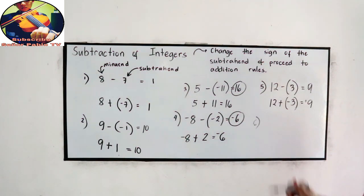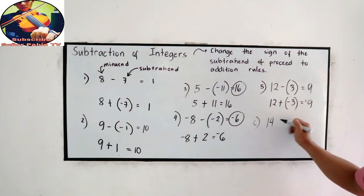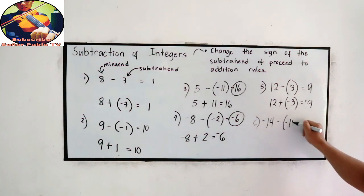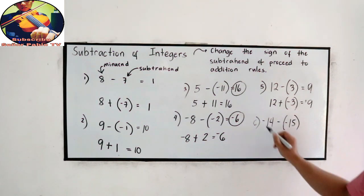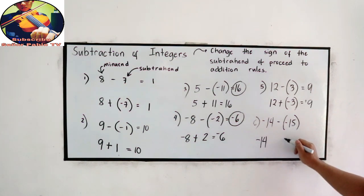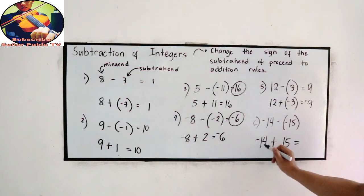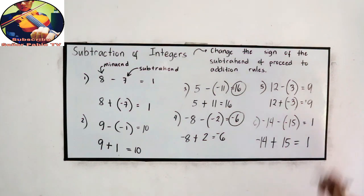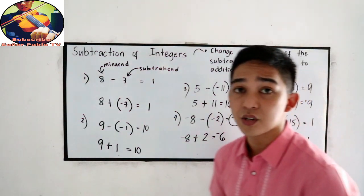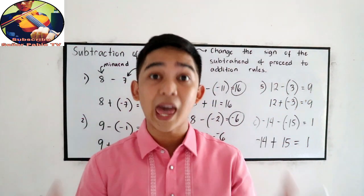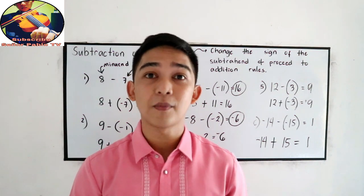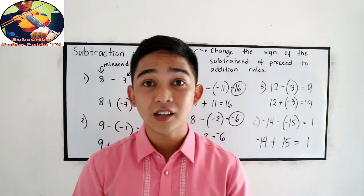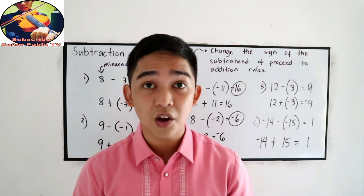Number 6: negative 14 minus negative 15. So negative 14 — change the sign of negative 15, that becomes positive 15 — then proceed to addition. We have 1 negative and 1 positive, so that is 15 minus 14, which is positive 1. In subtraction of integers, you need plenty of exercises. You need to solve a lot of problems, and you also need to master the addition of integers.